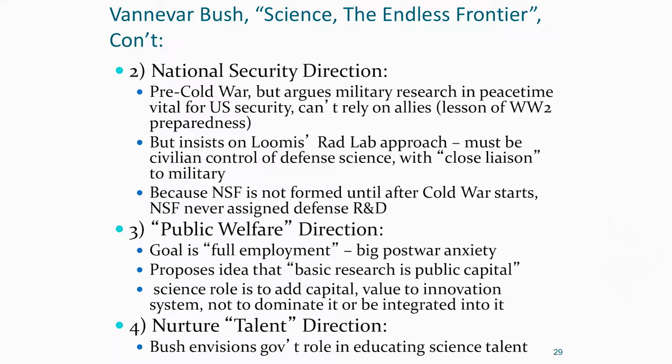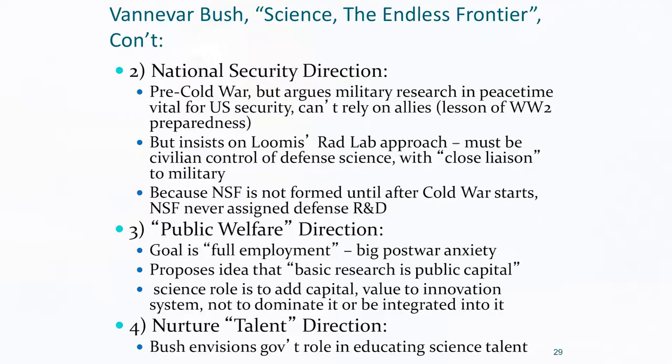The big anxiety at the end of World War II is that 16 million people overseas are going to come out of uniform and return to the United States, while we're dismantling all wartime spending. We're going to have another Great Depression — that's what everybody thinks. What are these 16 million people going to do? Bush is arguing we're going to get full employment, and he's going after this big post-war anxiety about where these returning vets will be employed.